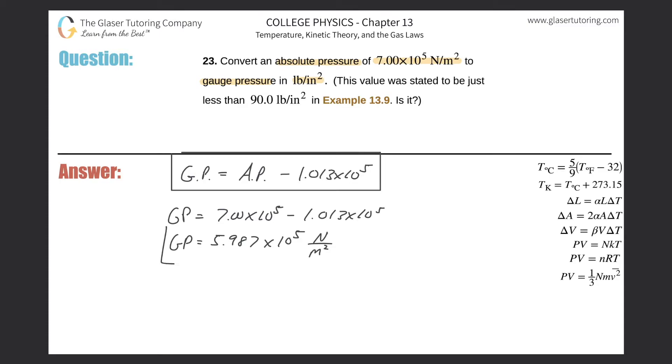So now what we need to do is convert this value into pounds per inches squared. The whole point here is somehow we have to get from newtons per meter squared and convert this into pounds per inches squared.